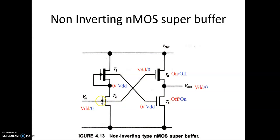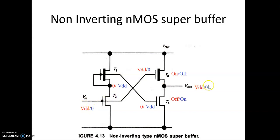The same node voltage is fed to the gate of T3, which is VDD. As IDS is proportional to gate voltage, IDS will be more, and this IDS will quickly charge the output. This is non-inverting because both input and output are at the same voltage: when input is VDD, output is also VDD; when input is 0, output is also 0.